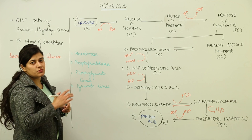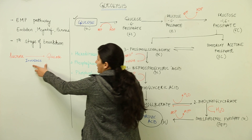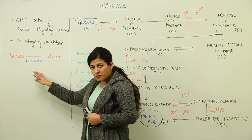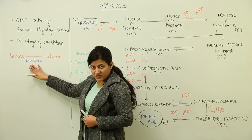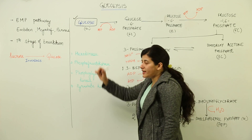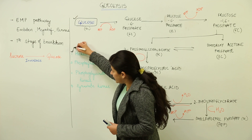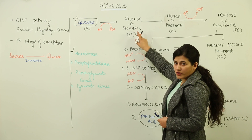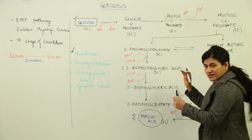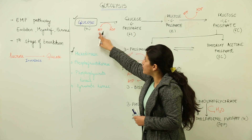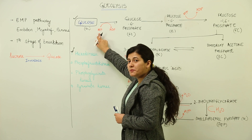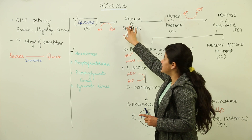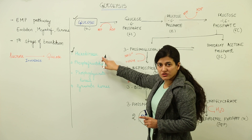The cell is provided with sucrose as food material, which by the activity of invertase enzyme is converted to glucose. Once it has become glucose, the first important enzyme is hexokinase. In the presence of hexokinase, glucose becomes glucose-6-phosphate. Glucose is a six-carbon compound, and one phosphate from ATP — which breaks down to ADP — comes and joins glucose at the sixth carbon position, forming glucose-6-phosphate, which is still a six-carbon compound.